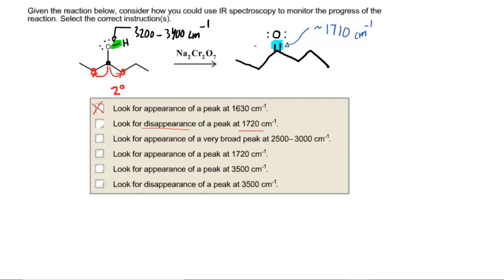The third answer box, look for an appearance of a very broad peak at 2500 to 3000. I don't think this molecule presented an appearance of any signal in that range so we can eliminate that. Look for appearance of a peak at 1720. Aha, we finally have that. That's going to be correct because again we did have the carbonyl bond being formed and that generated a signal around 1710 maybe 1720.